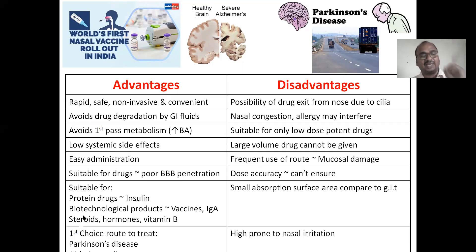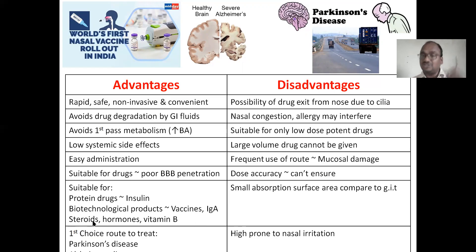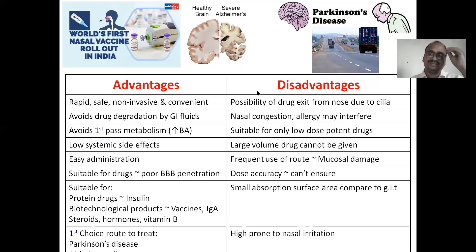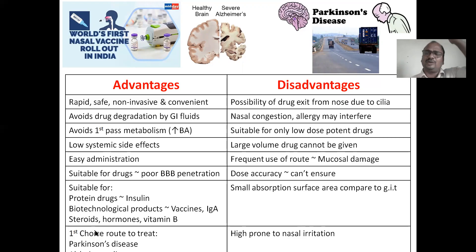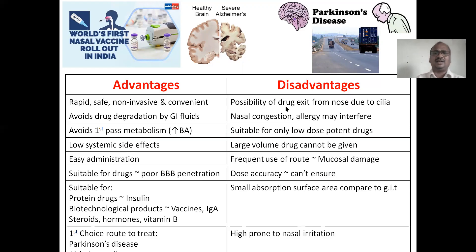It has low systemic side effects. Easy administration — only drops. Suitable for drugs with poor blood-brain barrier penetration that do not cross easily. Suitable for protein drugs like insulin, biotechnology products like vaccines, immunoglobulins A and G, steroids, hormones, and vitamins. It is the first-choice route for treatment of Parkinson's disease because the disease is related to the brain, so we deliver the drug directly there without unnecessarily exposing healthy tissues.